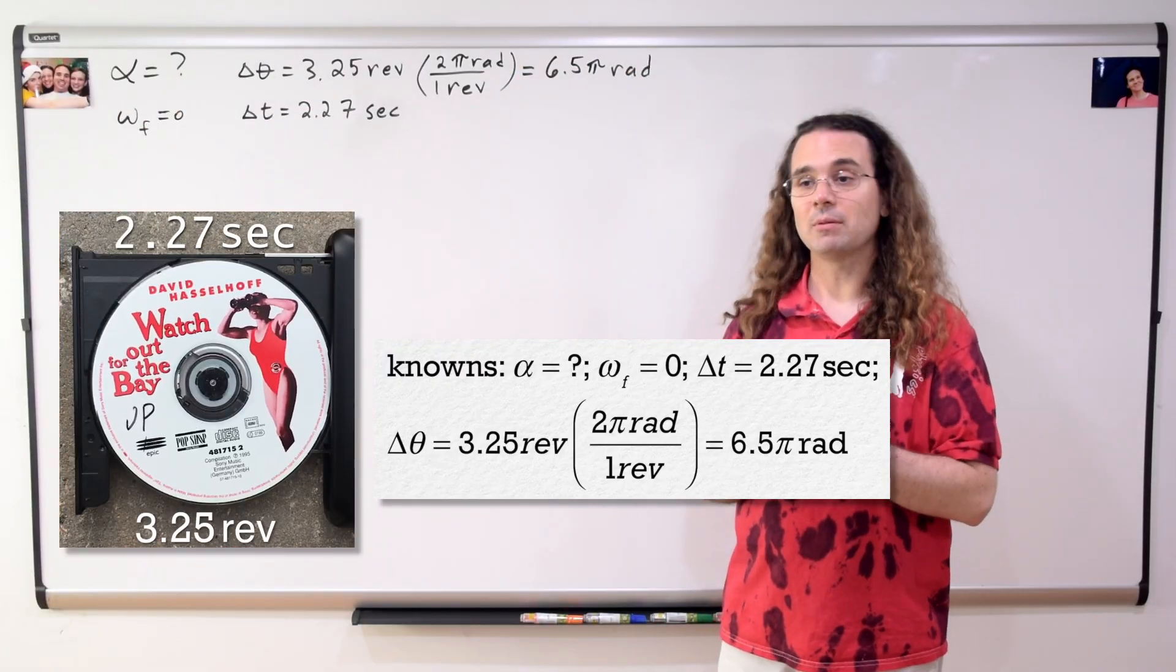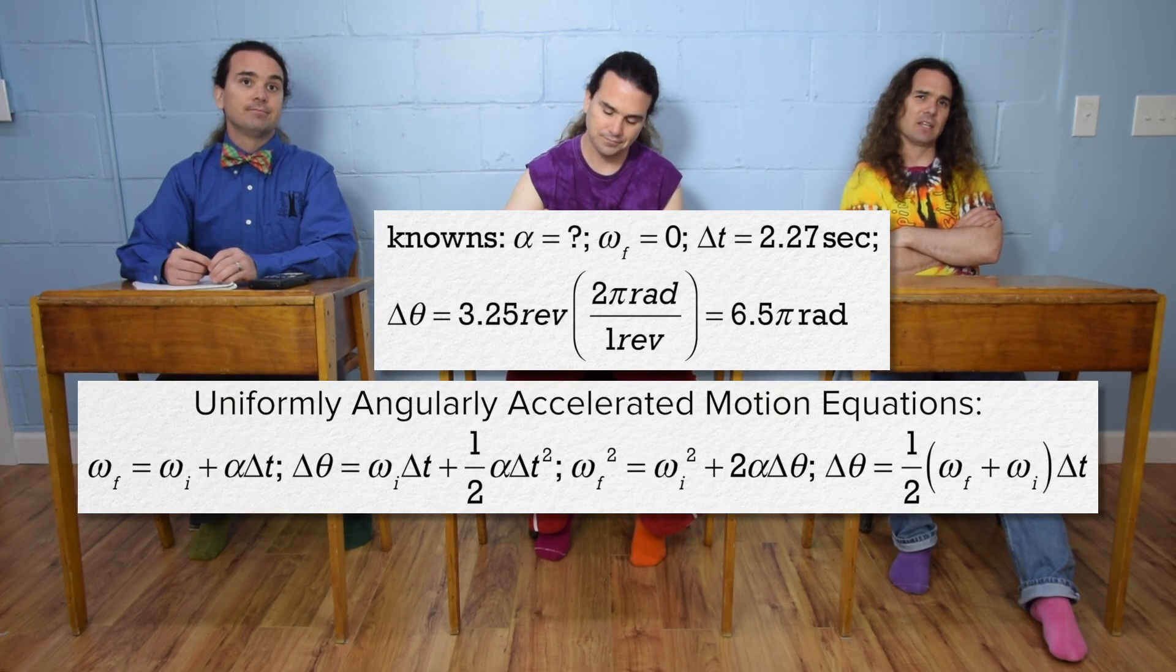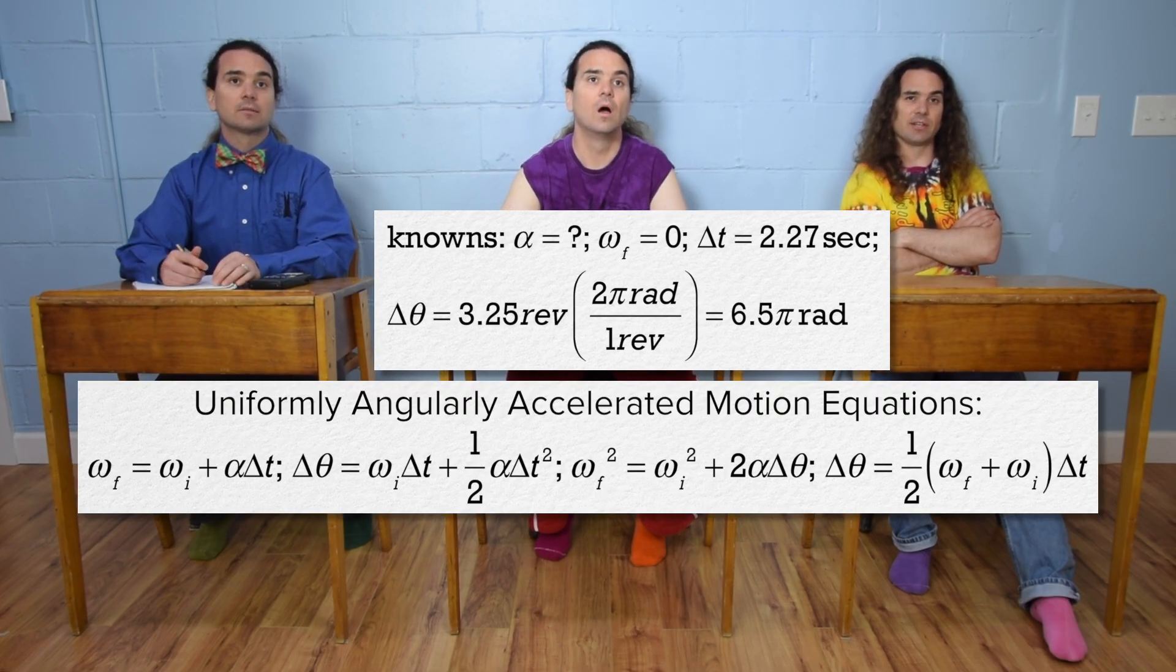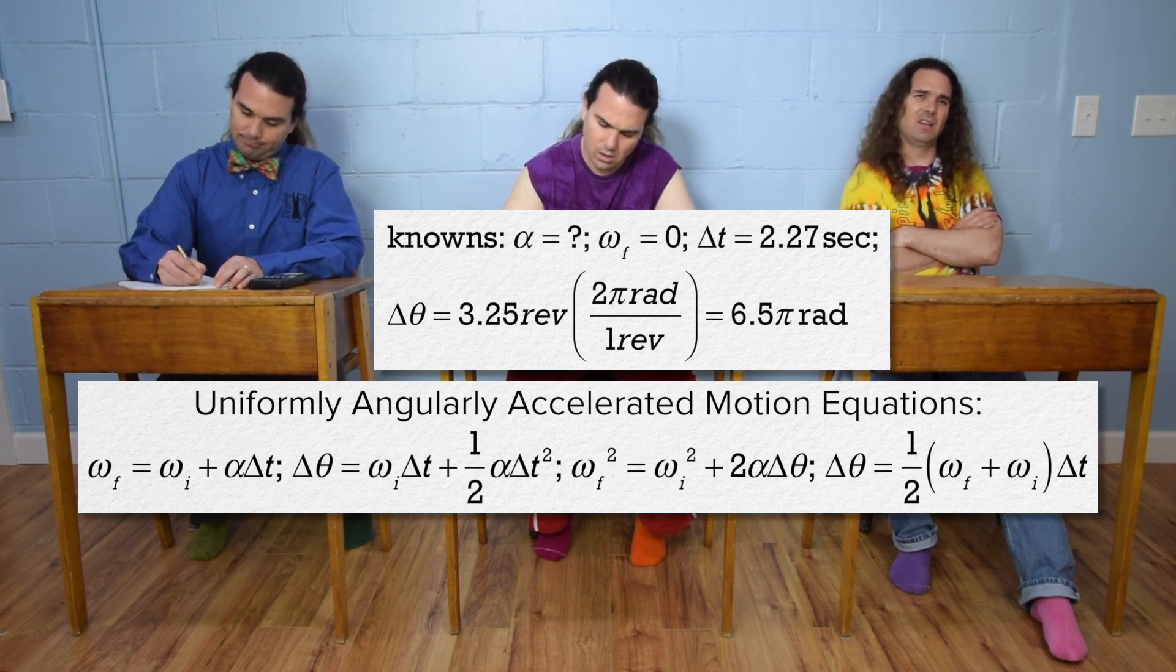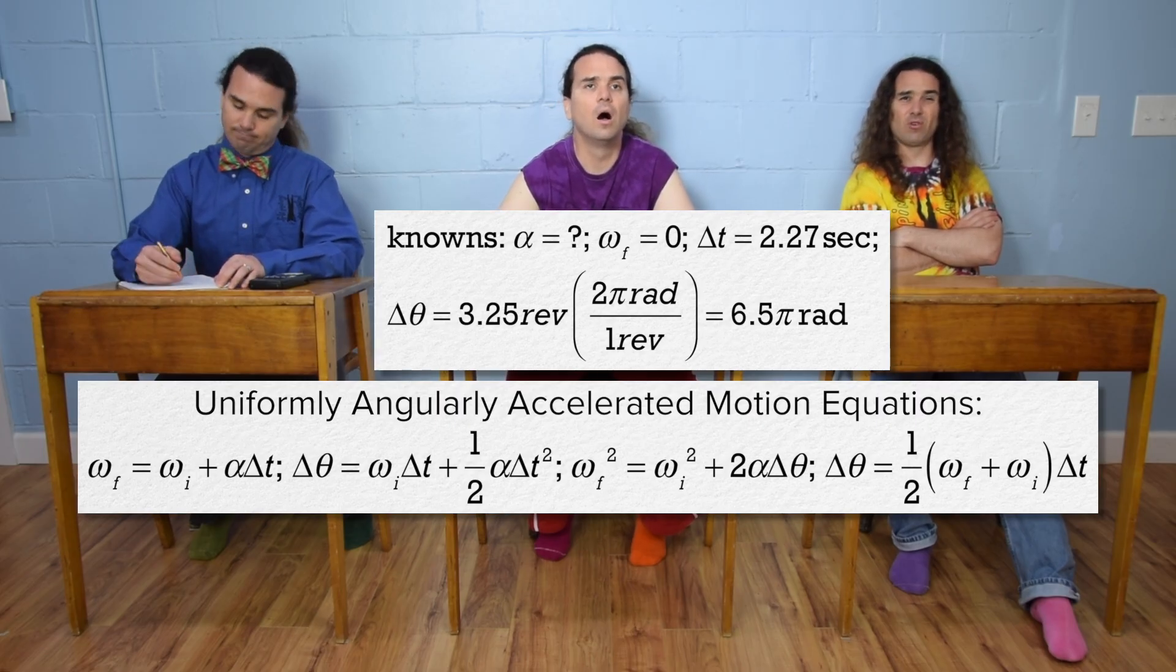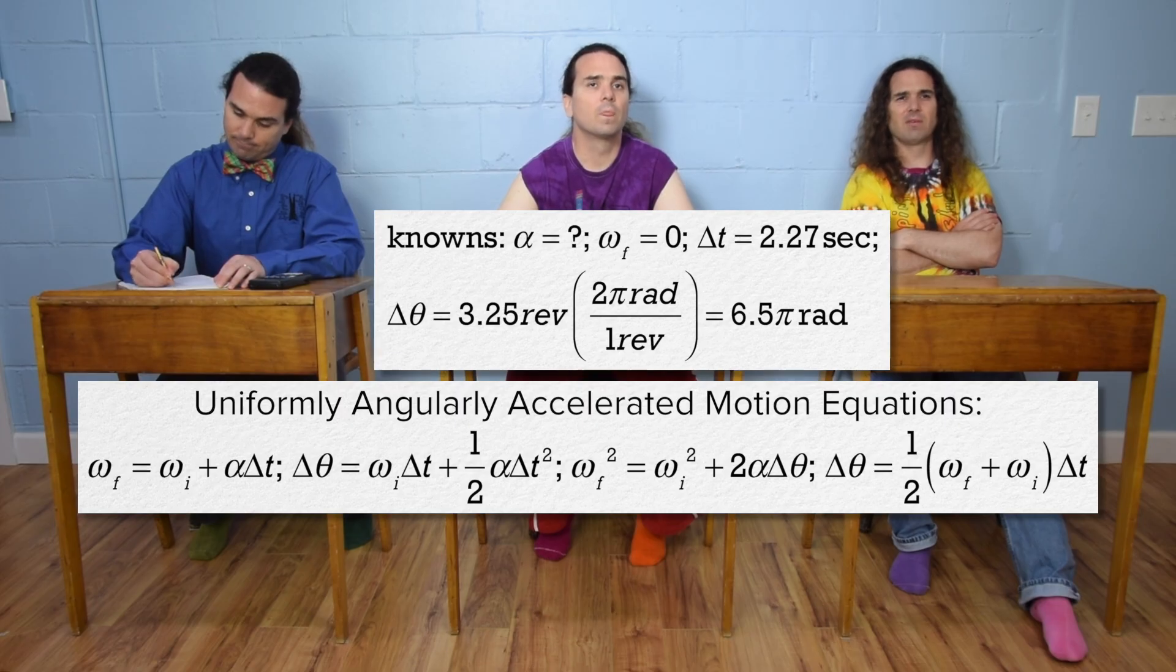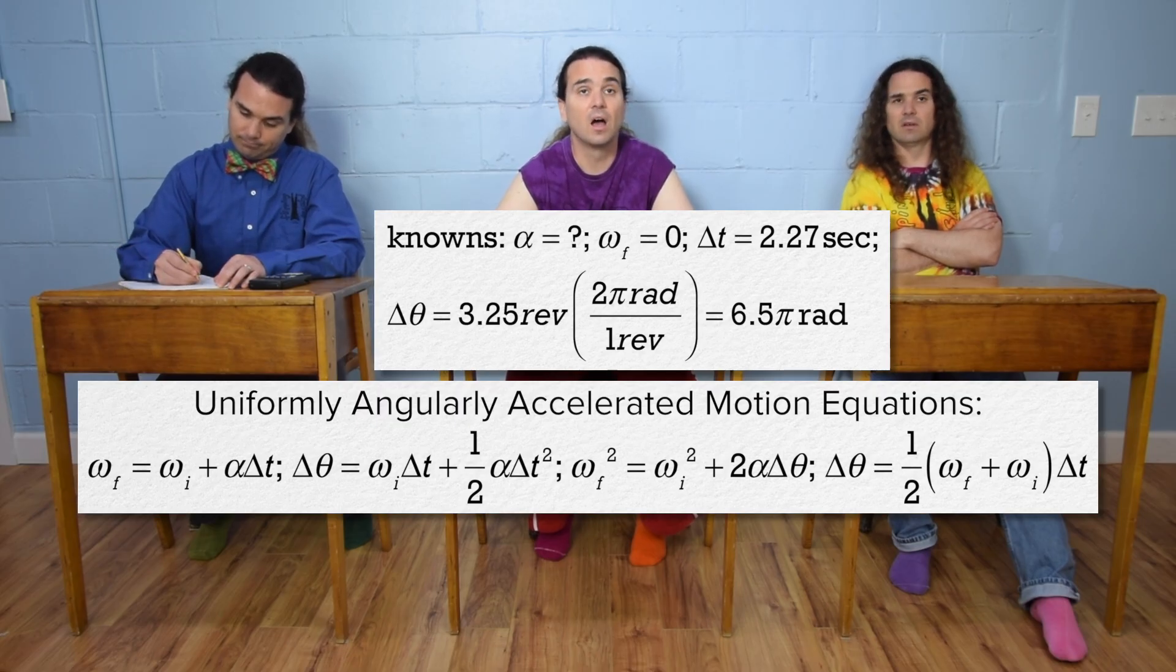Bo, please solve the problem. Well, we know we can use the uniformly angularly accelerated motion equations because the CD slows down uniformly. However, none of the u-alpha-m equations have all four of those variables in them. We need to solve for angular velocity initial first and then we can solve for angular acceleration.